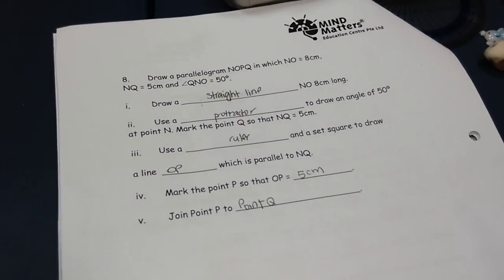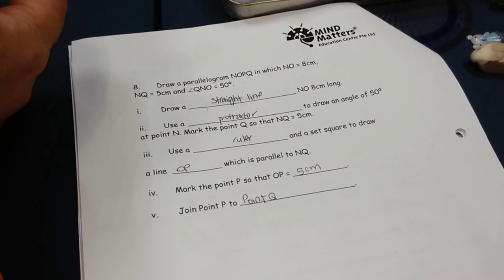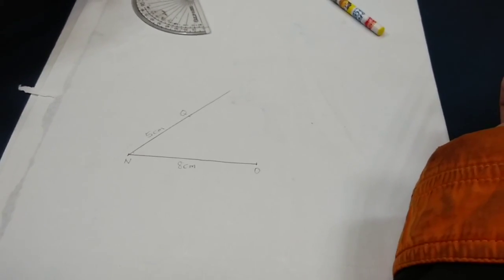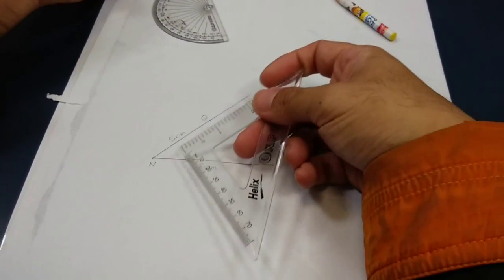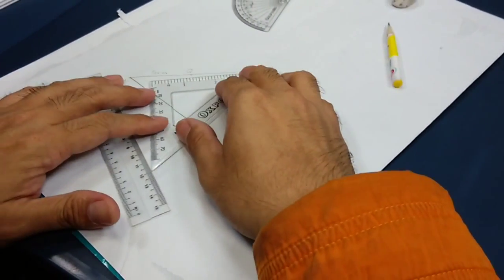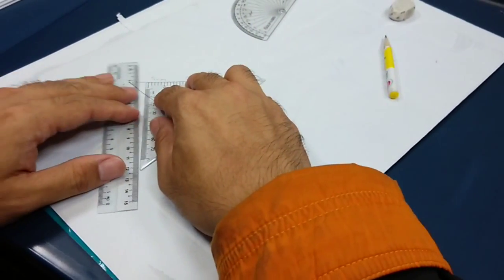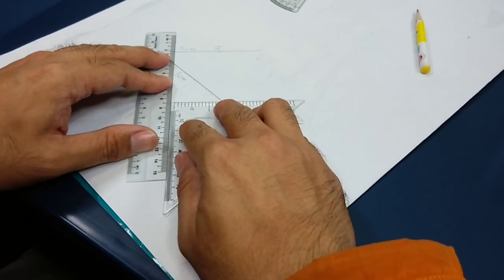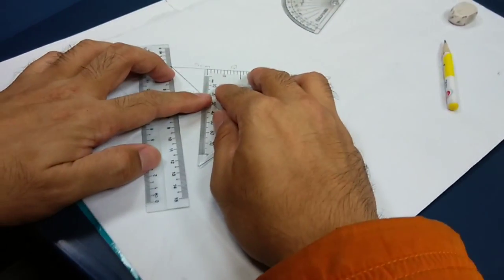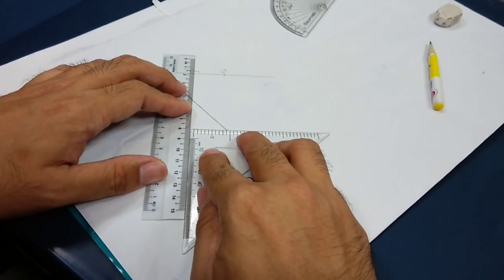Next one, what is it? Use a ruler and a set square to draw a line OP which is parallel to NQ. So, what? Again? Parallel to NQ right? Yeah. NQ is this side right? It will be parallel to. So, how it's done? See? Set square here. Then we bring down. Can you see or not? Yes. One more time. Here. Can you see on the line? Yes. Okay? Then you pull down to the point here. Okay?